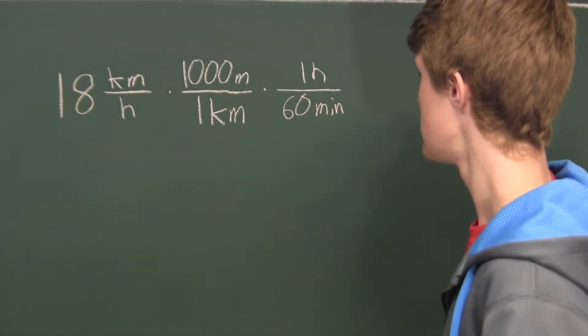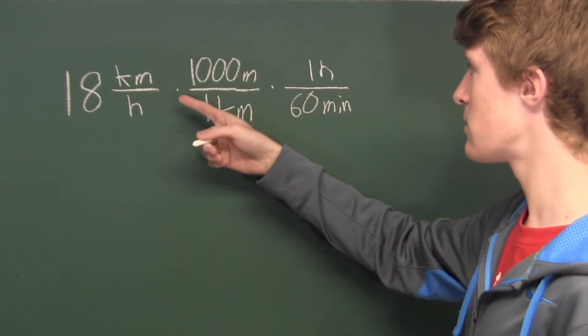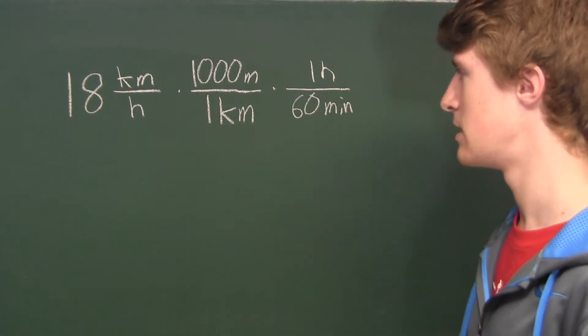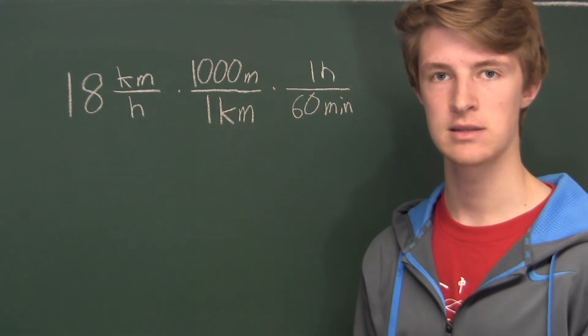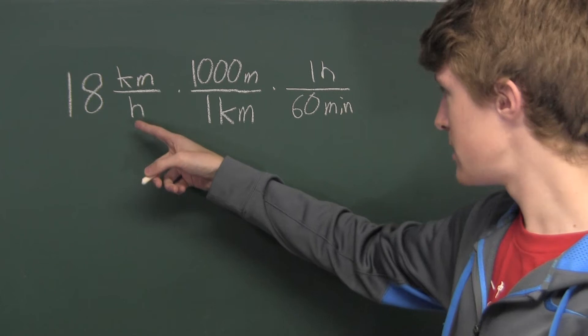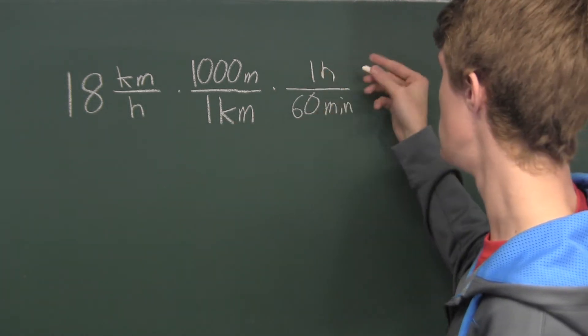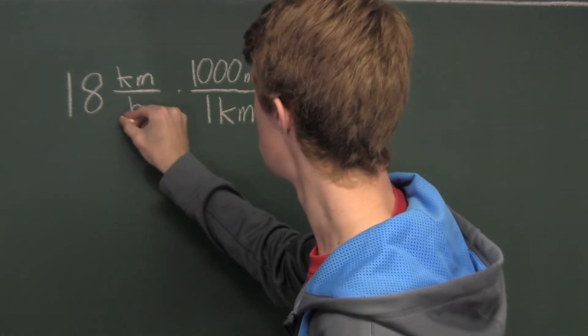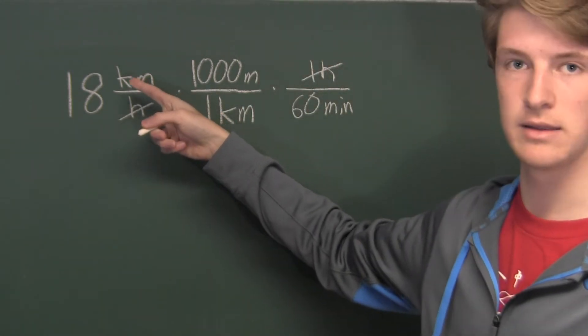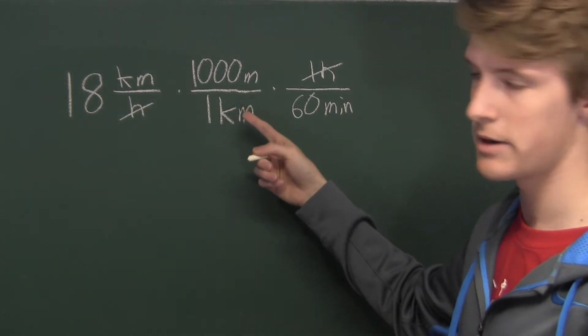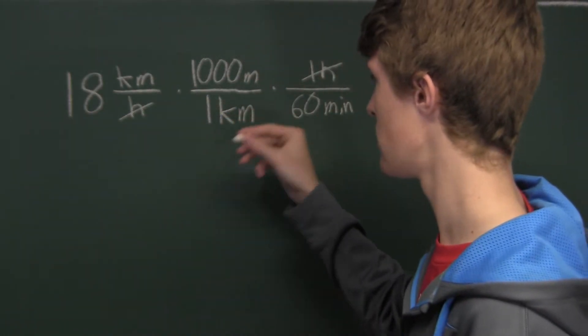So now we have 18 km per hour times 1,000 meters over a kilometer times 1 hour over 60 minutes. Now we have to start canceling. Here we have an hour in the denominator and an hour in the numerator, so those will cancel out. And here we have 1 km in the numerator and 1 km in the denominator, so we can cancel both of those out.